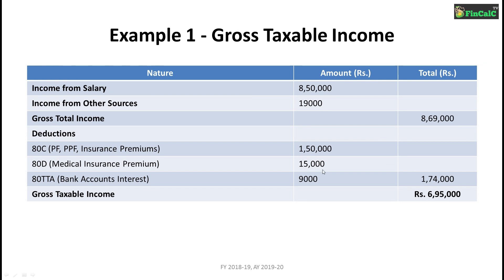Total deductions include Rs 1,50,000 in section 80C, Rs 15,000 in 80D, and Rs 9,000 in section 80TTA, making total deductions of Rs 1,74,000. This makes our gross taxable income Rs 8,69,000 minus Rs 1,74,000, which equals Rs 6,95,000.